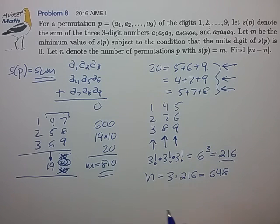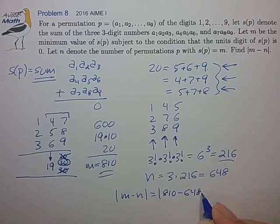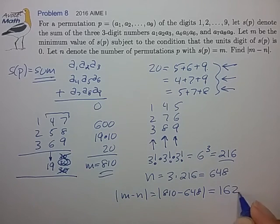And the number we're looking for is M minus N, which is 810 minus 648. And that is 162. And that's our final answer. Anyway, hope that helped, and we'll see you at the next video. Take care. Bye-bye.